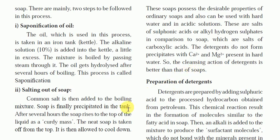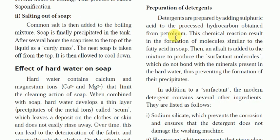Preparation of detergent: detergent is prepared by adding sulfonic acid to the processed hydrocarbon obtained from petroleum. When we use the hydrocarbon from petroleum, we add sulfuric acid. The chemical reactions result in the formation of molecules similar to the fatty acids in soap.